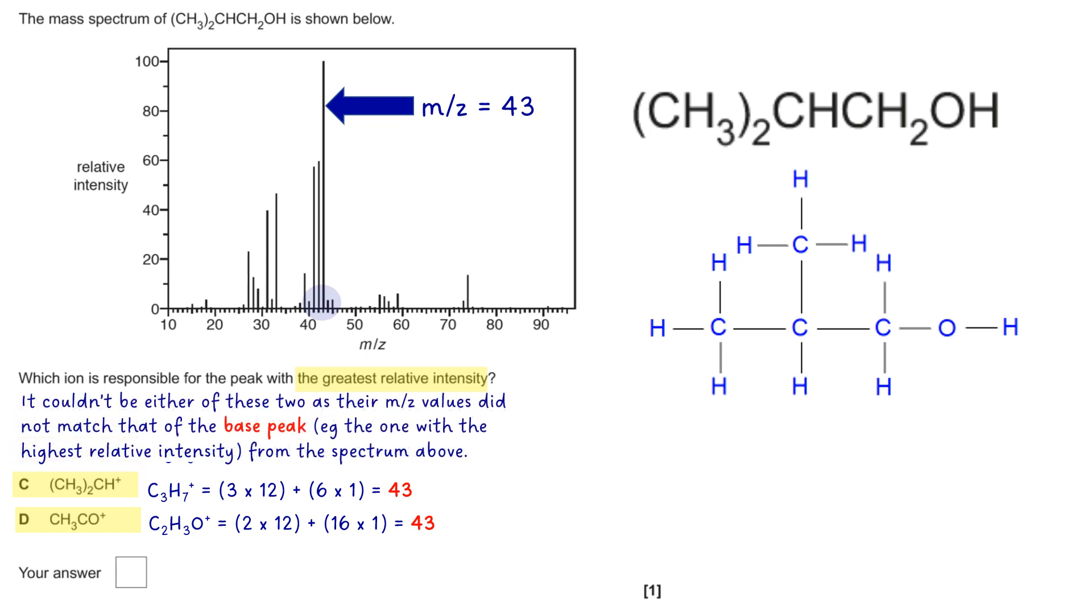So let's get rid of them and just process C and D. So getting rid of the color coding on our structures as well. Let's think about C first of all, CH3, 2, CH. It matches something on the structure there, so that could be a possible candidate.